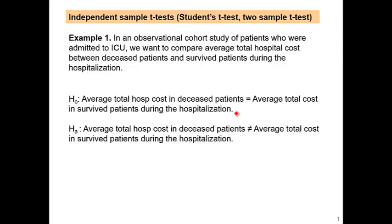As we learned in the hypothesis testing video, there are two hypotheses. The null hypothesis states that average total hospital cost in deceased patients is no different — equal to average total cost in survived patients during hospitalization. The alternative hypothesis states that the two are different.